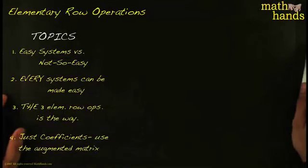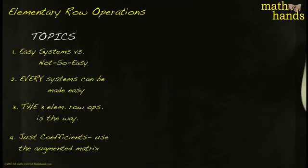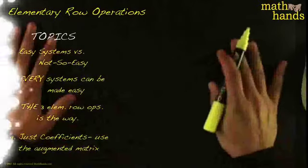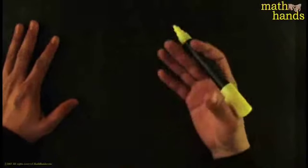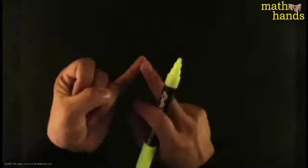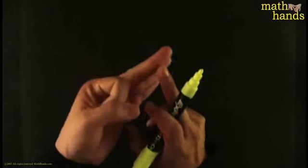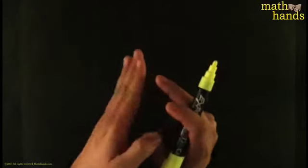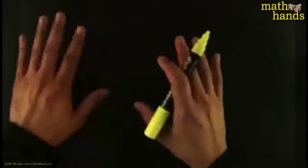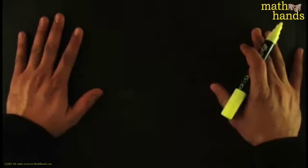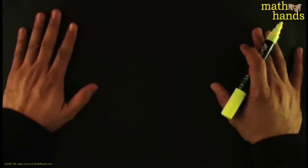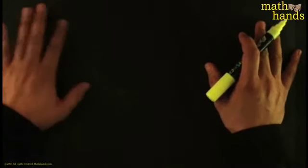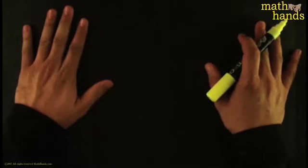Alright, let's get this party started. Today we're doing systems of equations. This is a really important lecture — it's the culmination of all the different methods we've learned to solve systems of equations. We've learned substitution, elimination, graphing, Cramer's rule, and now we learn the most important one: row reduction, or Gaussian elimination. It has many different names.